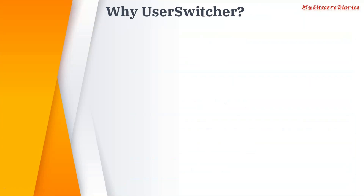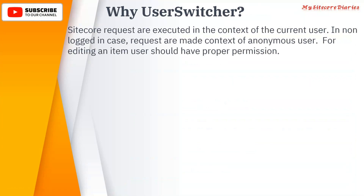For the security context, you can use User Switcher or Security Disabler. Sitecore recommends using User Switcher. Sitecore requests are executed in the context of the current user — in non-logged-in cases, requests run as the anonymous user. For editing an item, the user must have proper permission. There are two approaches: switch the user (User Switcher) or disable security entirely (Security Disabler).